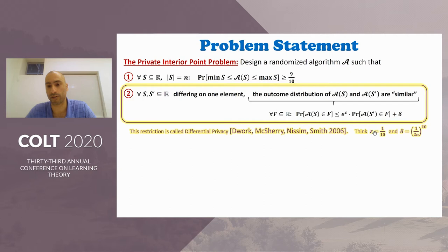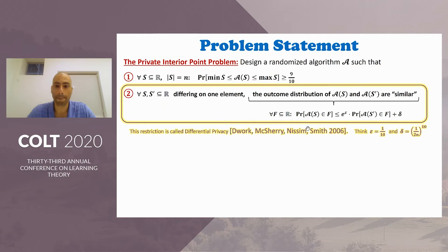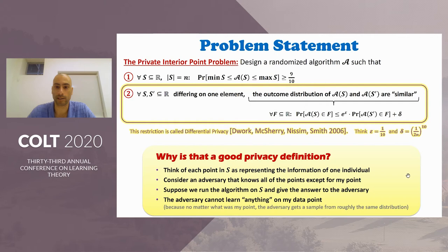You should think about epsilon as a small constant, say 1 over 10, and delta as a small function of the database size, much smaller than 1 over n. This second requirement is actually called differential privacy. If you've never seen it before, here is a quick explanation for why we like this requirement and why we think about it as a privacy notion.